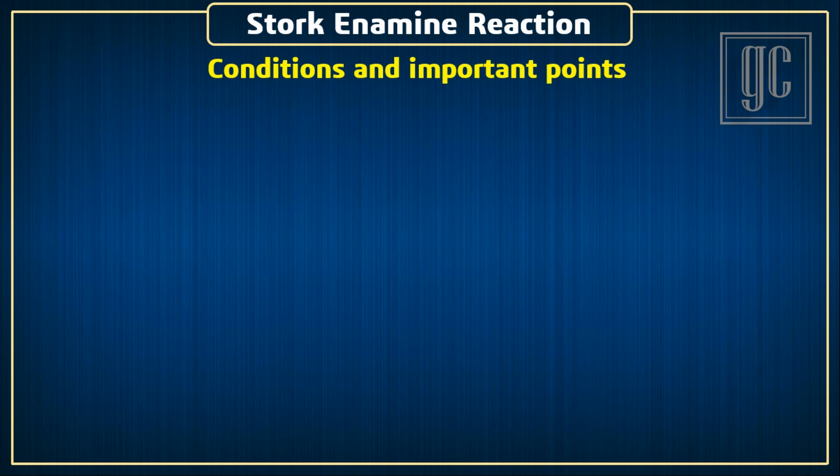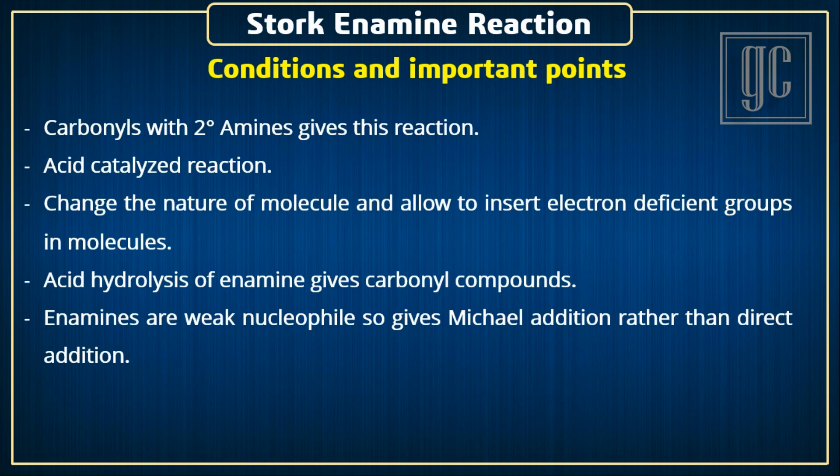The conditions and important points of the reaction: Carbonyls with secondary amines give this reaction. This is an acid-catalyzed reaction. This is an umpolung reaction, which changes the nature of the molecule and allows insertion of electron-deficient groups. Acid hydrolysis of an enamine gives carbonyl compounds. Enamines are weak nucleophiles, so they give Michael addition rather than direct addition.